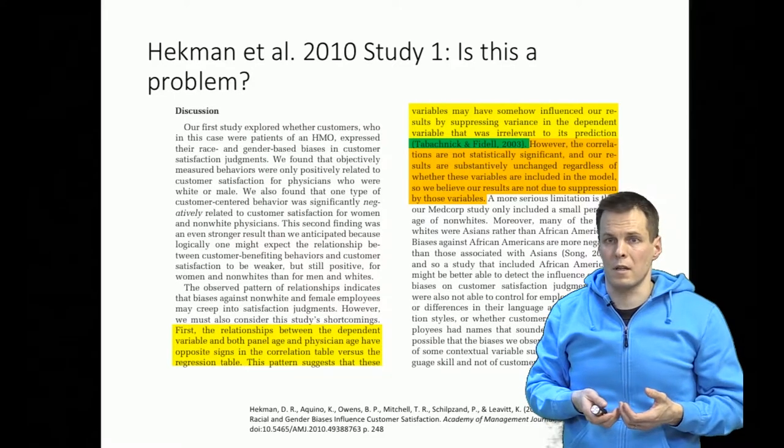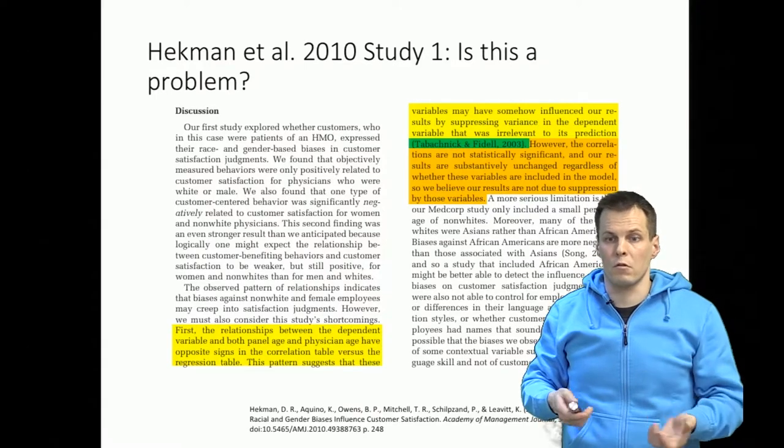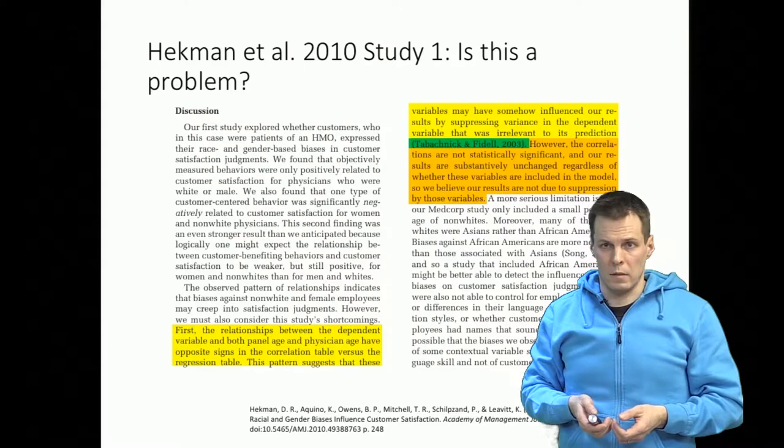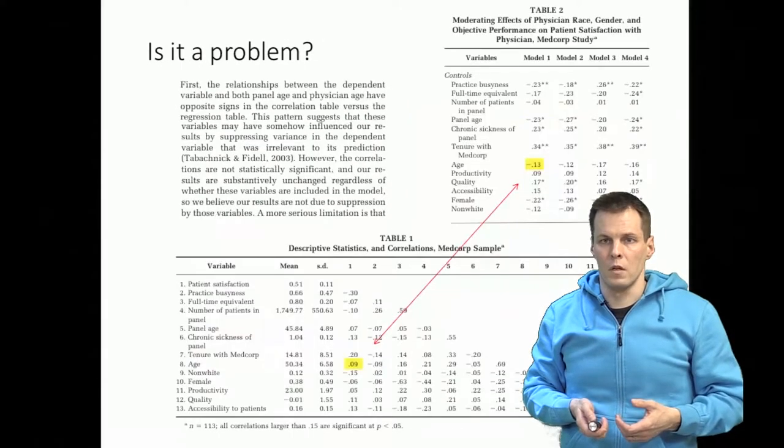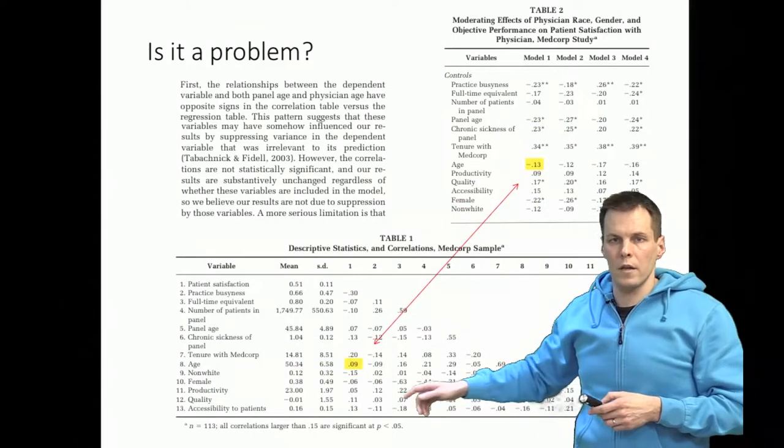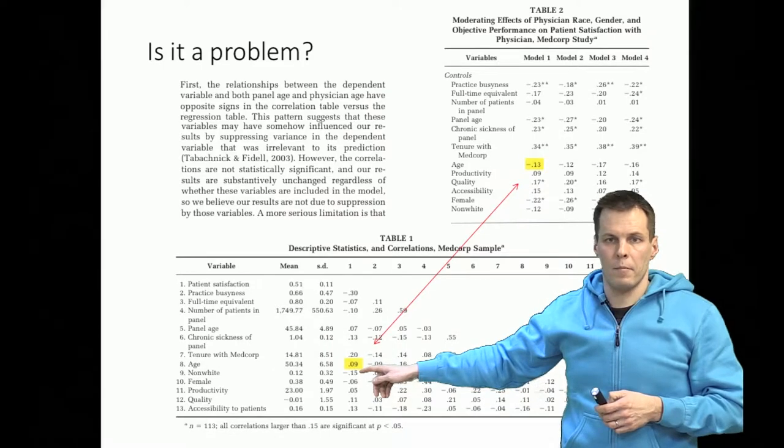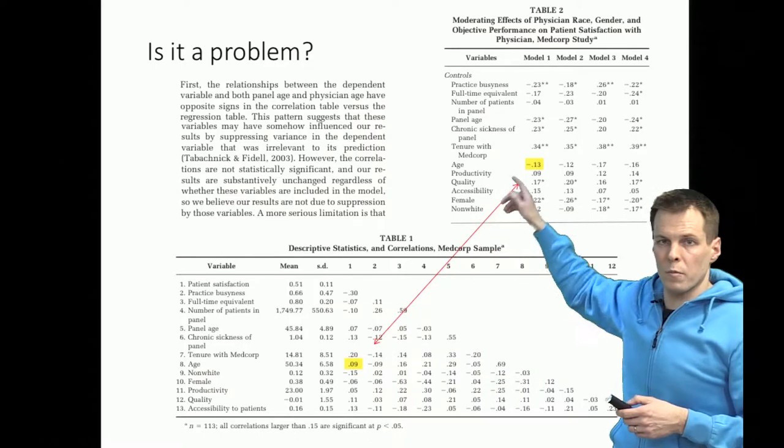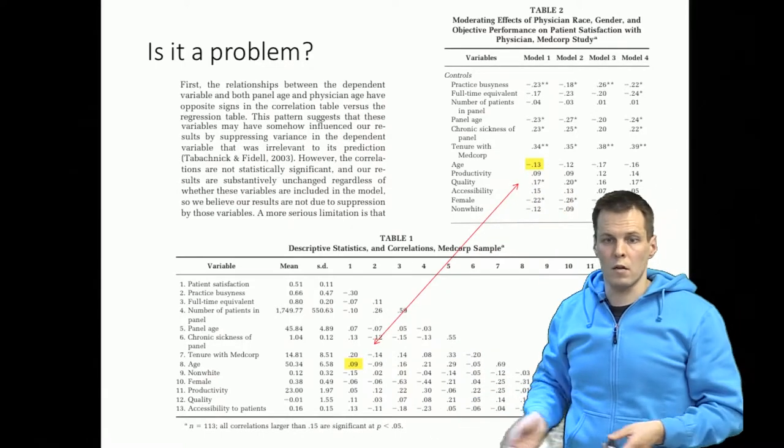The suppression effect is not something that when it occurs is problematic; it's a feature of rigorous analysis. So let's take a look at their actual statistics. So what are the numbers that they refer to? They identified that the correlation between physician age and patient satisfaction is positive, and their corresponding regression coefficient is negative. So why could that be the case?